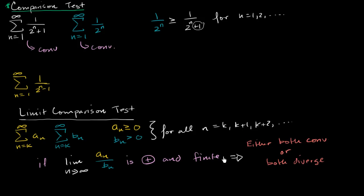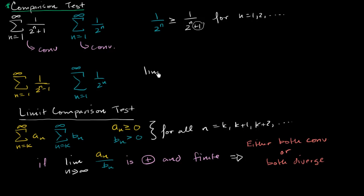This is really useful — it's a more formal way of saying that if, as n approaches infinity, these series have similar behavior, then they either both converge or both diverge. Let's apply that here. If we say our b sub n is one over two to the n, just like we did before — these two series satisfy all of the constraints — so let's take the limit as n approaches infinity of a sub n over b sub n: that's one over two to the n minus one, divided by one over two to the n.